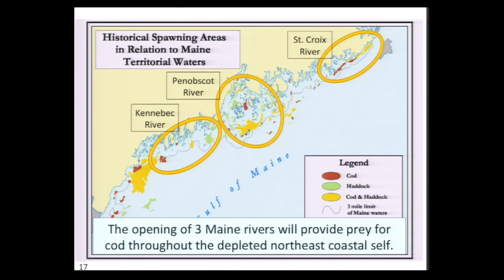Letting robust stocks of alewives rebuild will change the bottleneck for maturing cod and every other small and medium-sized predator on the coast. It should greatly change the coastal prey base in winter, and this suggests that cod would once again be attracted to inshore areas where these young-of-year alewives gather in the fall. I've circled the spawning areas that will be affected by restoration of the Kennebec, Penobscot River, and St. Croix River systems. It's a totally win-win situation — an incredible opportunity.